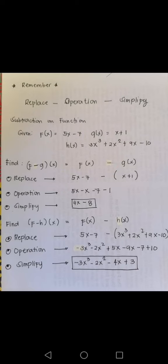We have the given f(x) = 5x - 7, g(x) = x + 1, and h(x) = 3x³ + 2x² + 9x - 10. Let's go to the first sample.